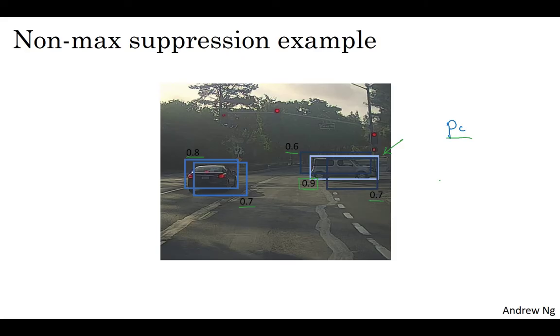Next, you then go through the remaining rectangles and find the one with the highest probability, the highest PC, which in this case is this one, it was 0.8. So let's commit to that and just say, oh, I've detected a car there. And then the non-max suppression part is to then get rid of any other ones with a high IOU. So now every rectangle has been either highlighted or darkened. And if you just get rid of the darkened rectangles, you're left with just the highlighted ones. And these are your two final predictions.